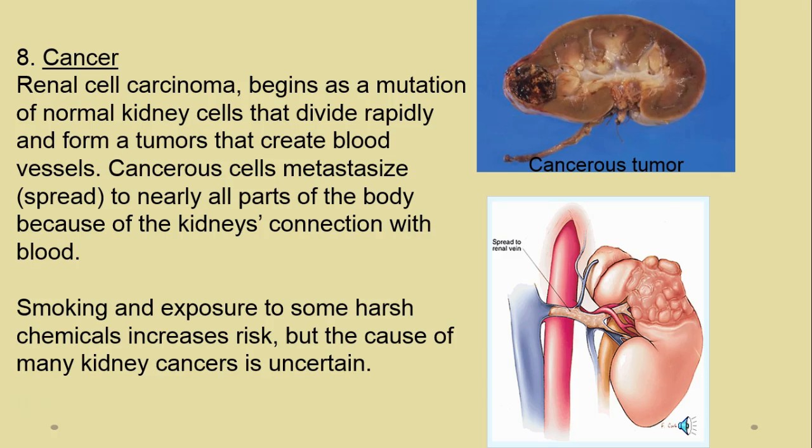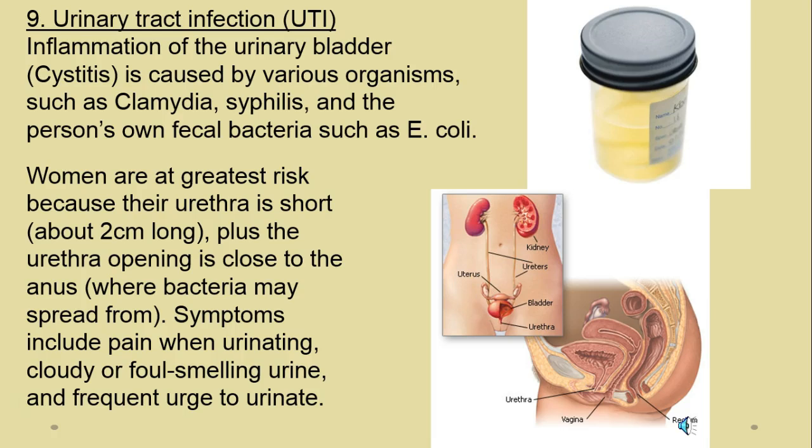Renal cell carcinoma — we're not always sure why cancer begins; sometimes it's due to chemical exposure, but the etiology is often unknown. It's usually a mutation of normal kidney cells, and once they metastasize — meaning they start to spread — they set up satellites in different parts of the body. It's a very serious disorder because the kidneys are connected to the bloodstream, so cancer cells get sent everywhere.